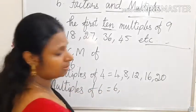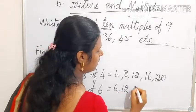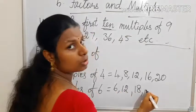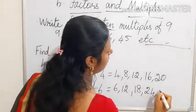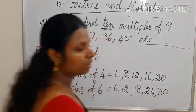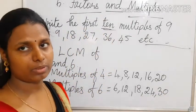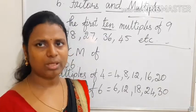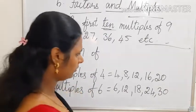6 ones are 6, 6 twos are 12, 6 threes are 18, 6 fours are 24, 6 fives are 30. Here also I have written 5 numbers. If you want, you can write a little more. Let us select the common one.